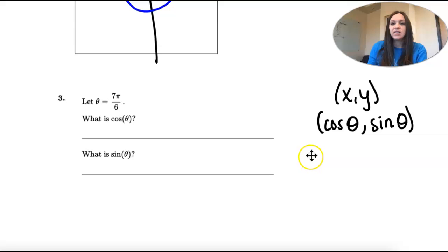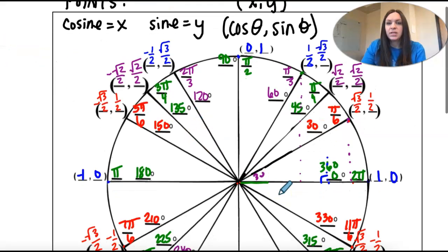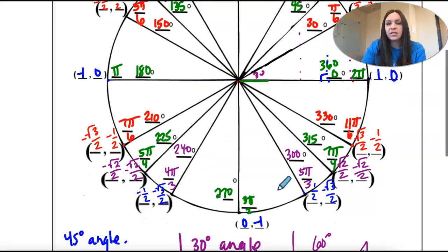So let's go to 7 pi over 6 on our unit circle and find the point. So 7 pi over 6 is right here, 210 degrees.